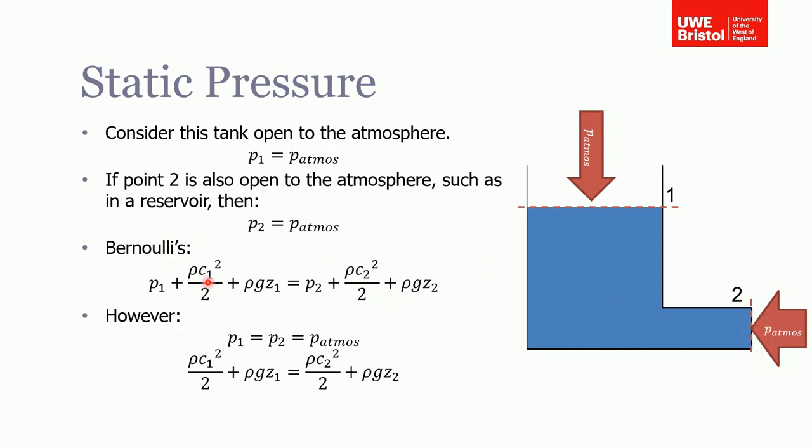If we take our Bernoulli's equation between 1 and 2, and we know that p1 and p2 are equal to atmospheric, then if we put them in they will cancel, leaving us with this equation. The velocity of the fluid here would be proportional to the difference in height between 1 and 2.